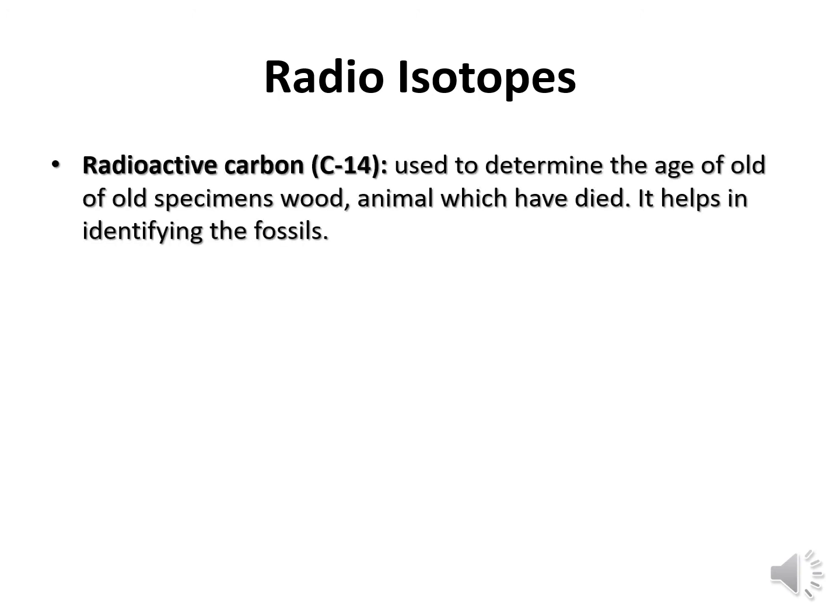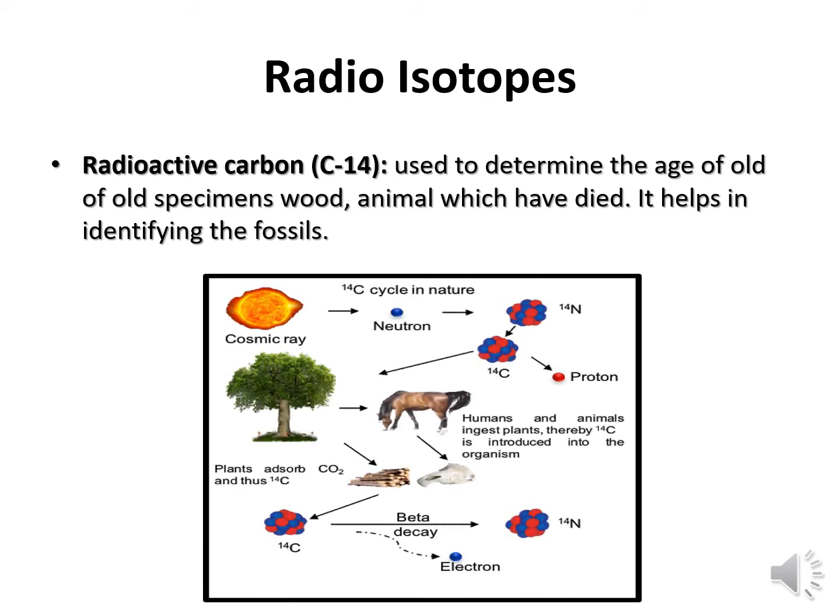For example, Carbon-14 is a radioactive carbon isotope. This isotope is used in determining the age of old specimens — wood, animals which have died — and it helps in identifying fossils. Using radioactive Carbon-14, we can find out the age of any fossil substance or dead animal. This technique is commonly known as carbon dating.